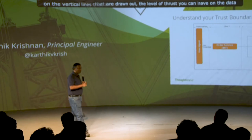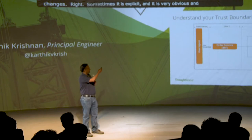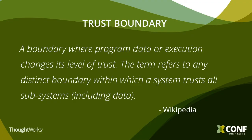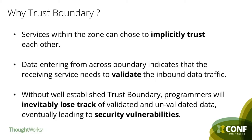Sometimes it's explicit and obvious, and sometimes it's not. For example, when communication happens between, say, inventory service and order service, there is a good amount of reliability you can have, as compared to looking at data received from the public internet. So it's important for us to understand what is called a trust boundary. As per Wikipedia, it's a boundary where program data or execution changes its level of trust.